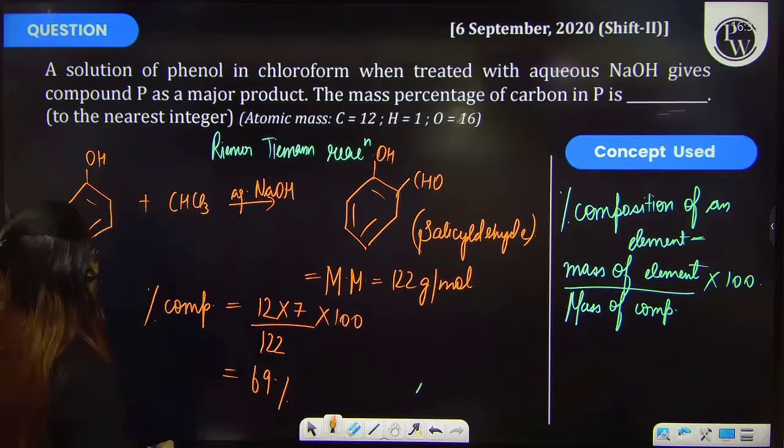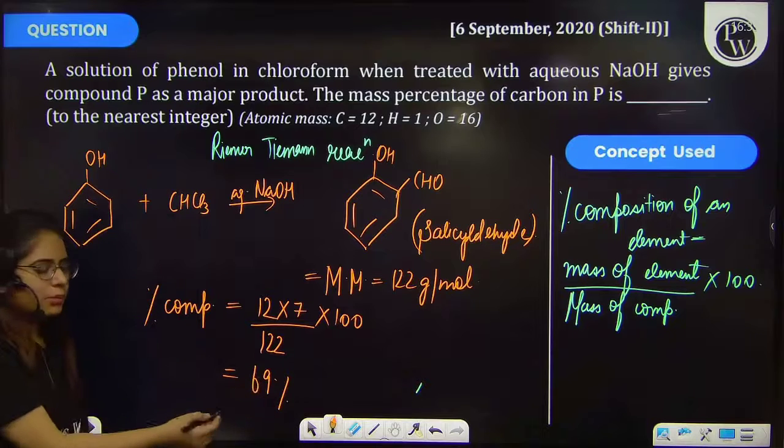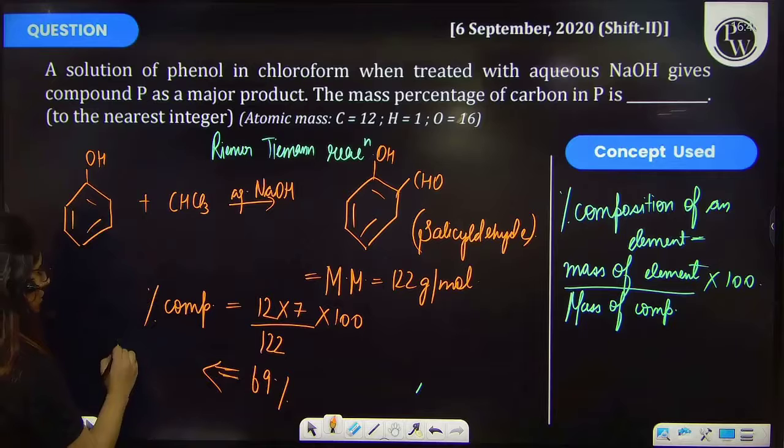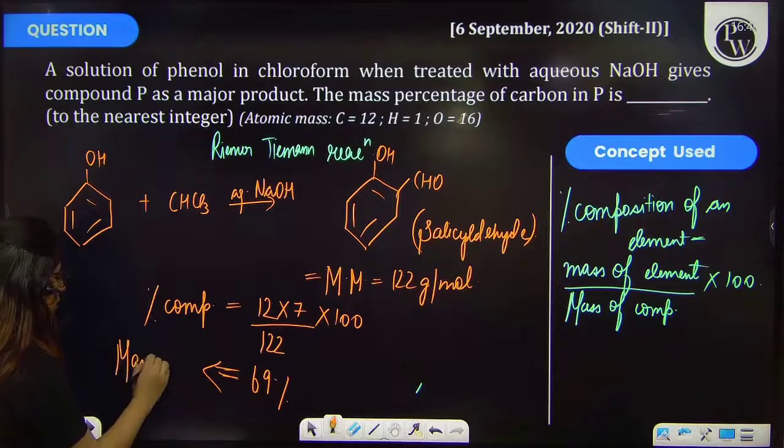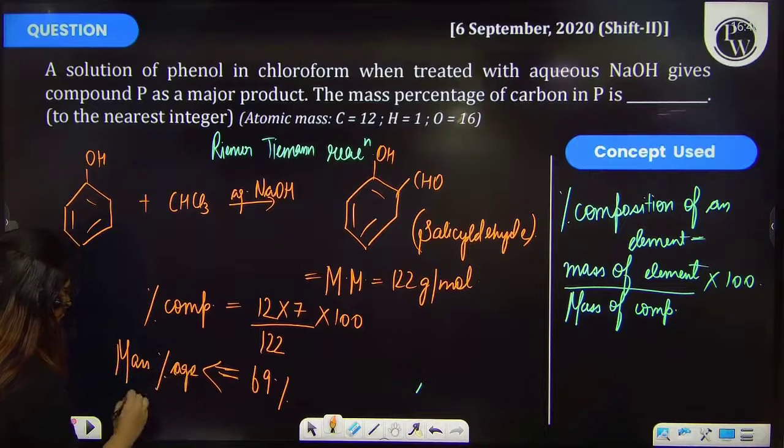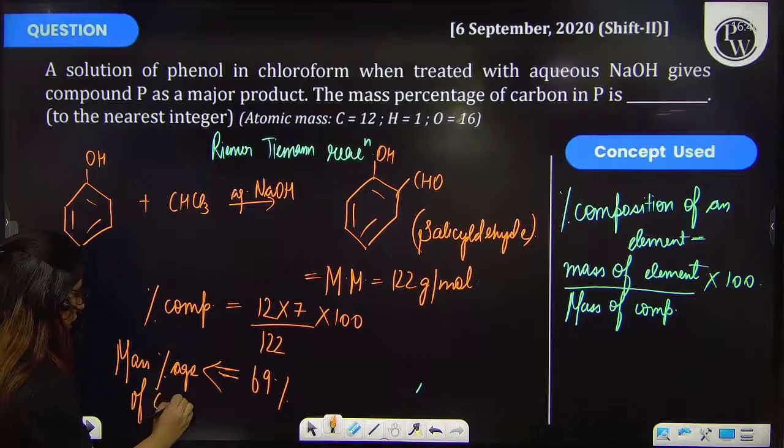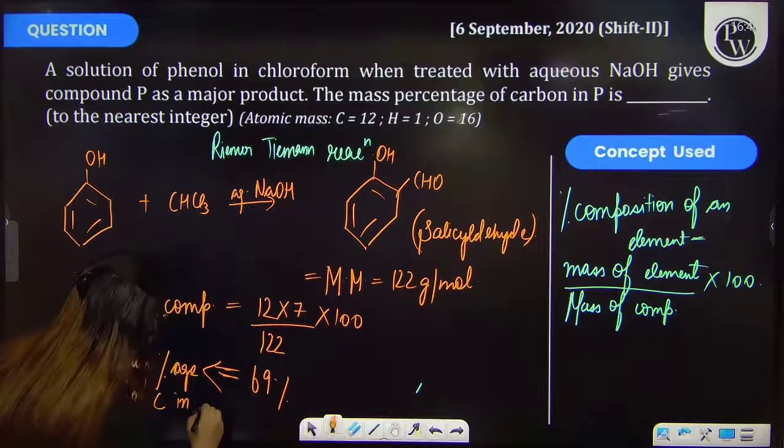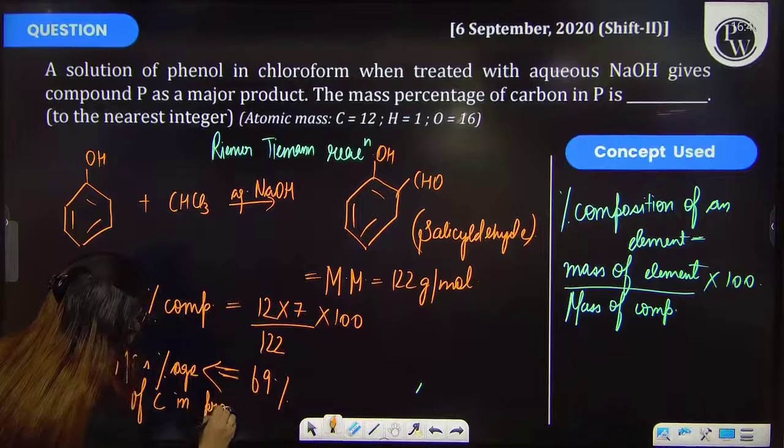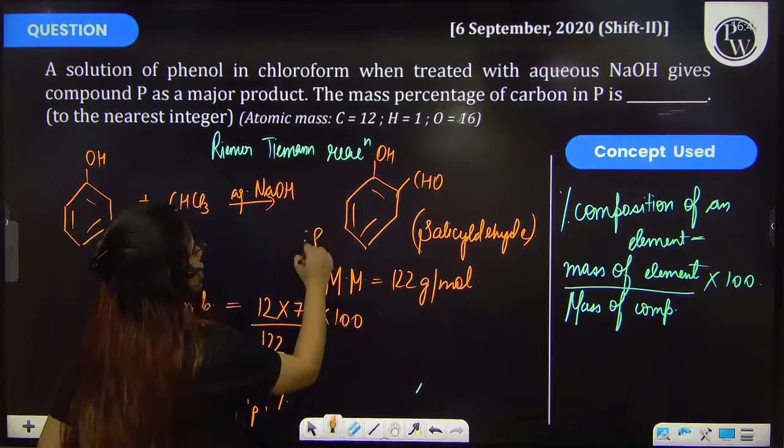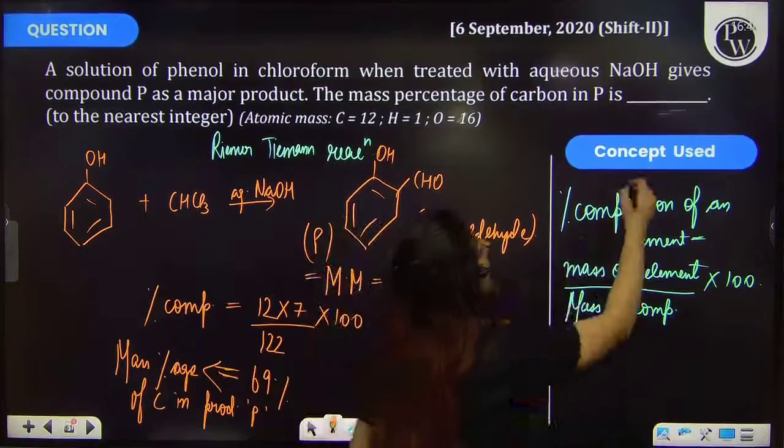That means this much percent of the carbon is present. This is the mass percent of carbon in compound or in the product P. That is this product. So therefore your answer is 69 percent.